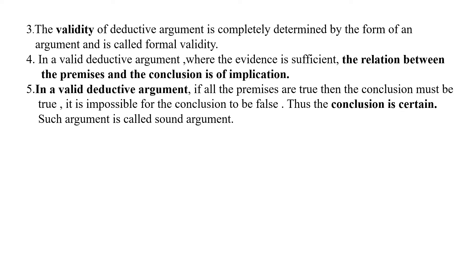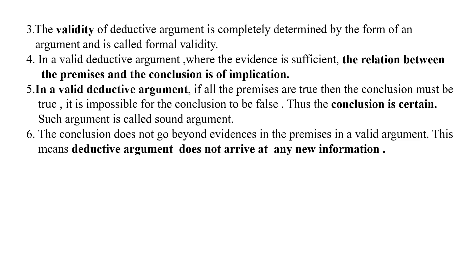Thus, the conclusion of a valid deductive argument is certain, and such a deductive argument is also called a sound argument. Sixth, the conclusion of a valid deductive argument does not go beyond the evidence in the premises. So in a deductive argument, we do not arrive at new information — the conclusion asserts what is already stated in the premises and does not give us any new information.